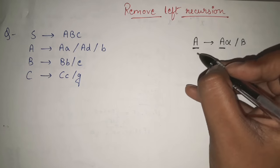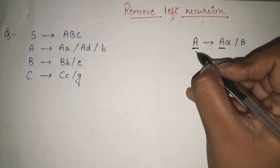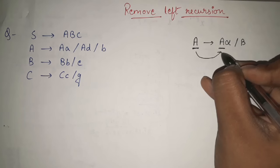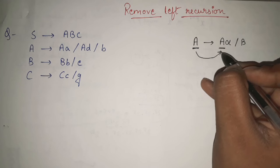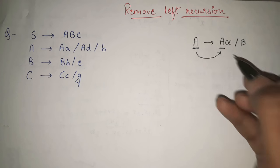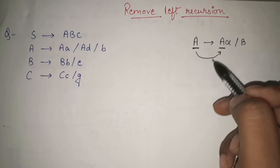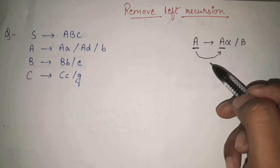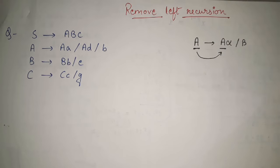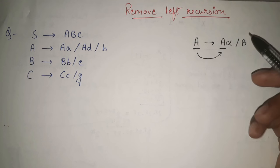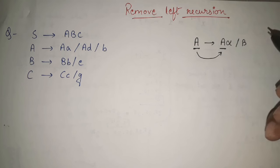Here also, if you see, A is again calling A — A is calling A, from here again A is called, again this will happen, again A is called, and similarly we will go in a forever loop, an infinite loop. That's why obviously we don't want an infinite loop. So we need to remove this left recursion whenever it is present in any production.